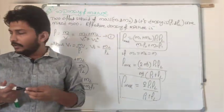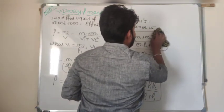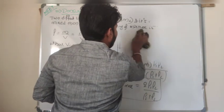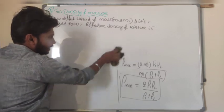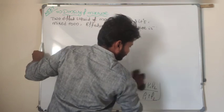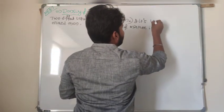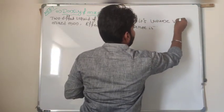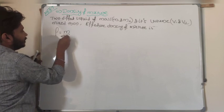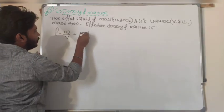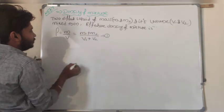Now if we take two different liquids with volumes V1 and V2 and densities rho1 and rho2 and mix them, we need to find the effective density. Density equals total mass divided by total volume: (m1 + m2) / (V1 + V2).